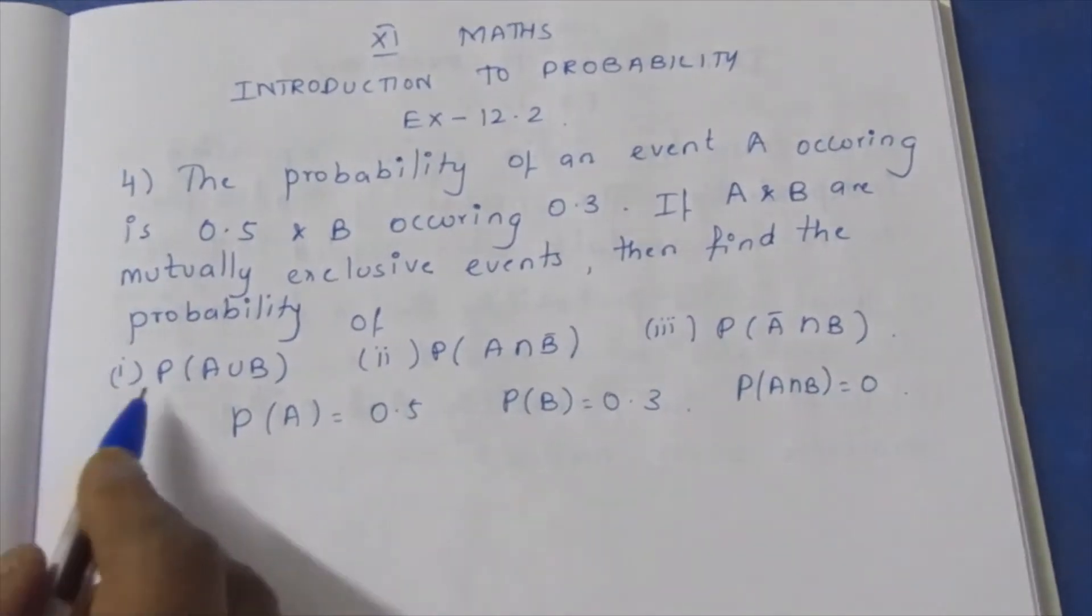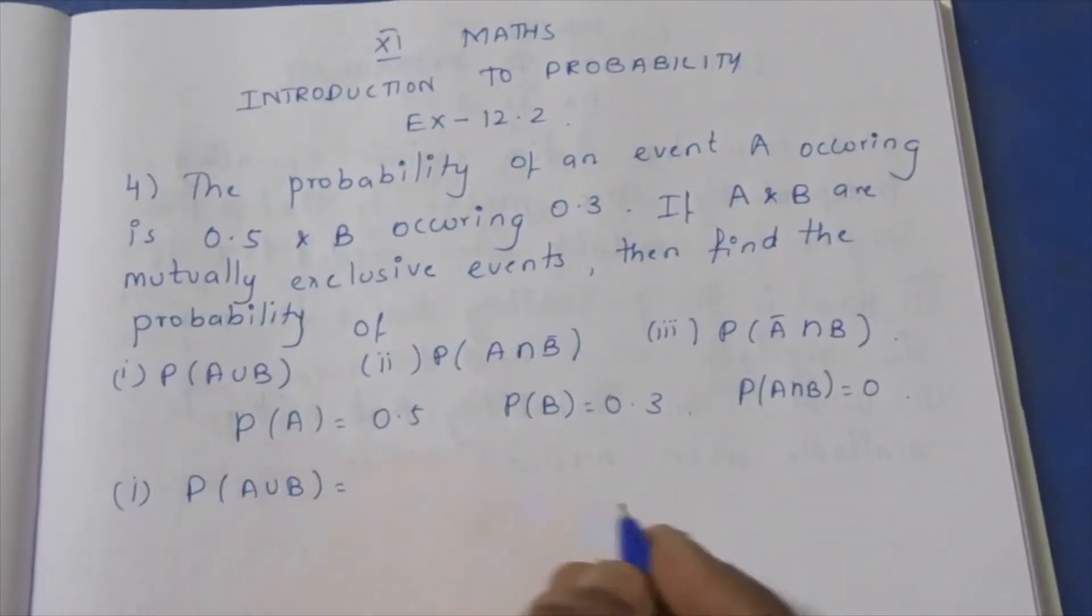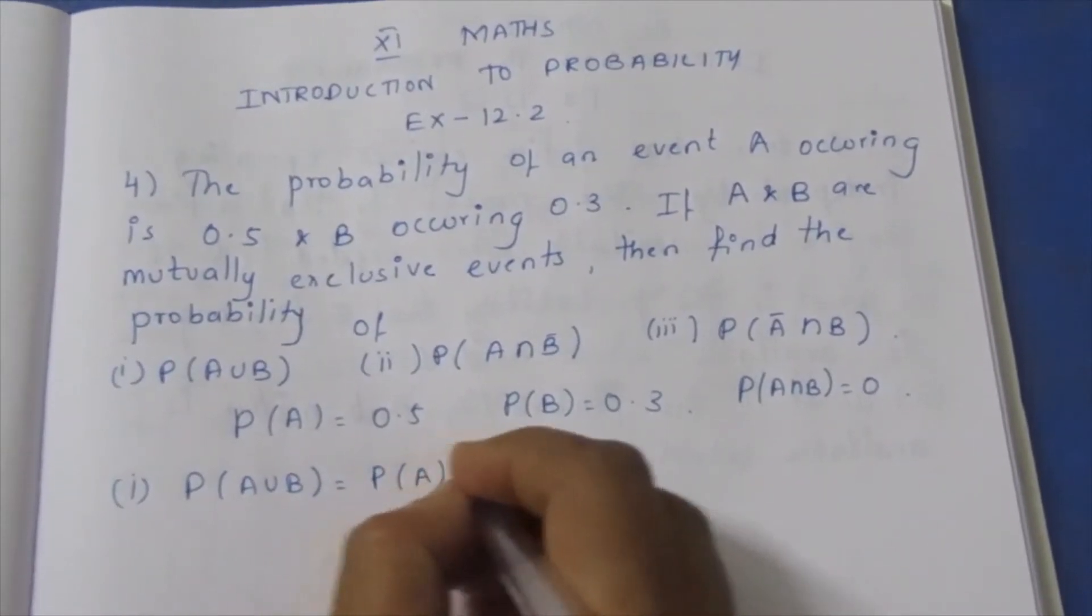Then find the probability of A union B. First subdivision: probability of A union B. I'll tell you the formula.